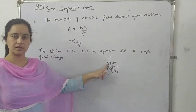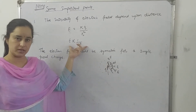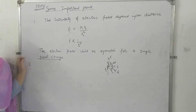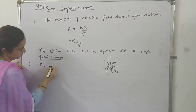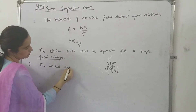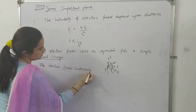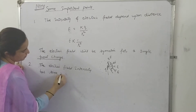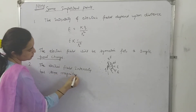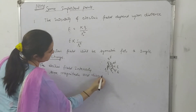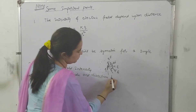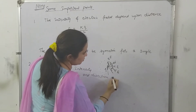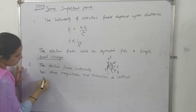If there is a change in distance, then the electric field will be changed. And the second point is: the electric field intensity has the same magnitude and direction.